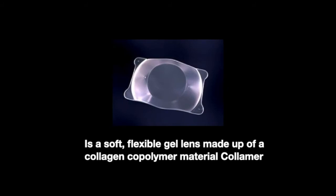ICL is a soft flexible gel lens made up of collagen and co-polymer material called Collamer. Collamer as a material does not cause any reaction in the eye. ICL is a popular alternative to LASIK and PRK since it does not require any removal of corneal tissue.